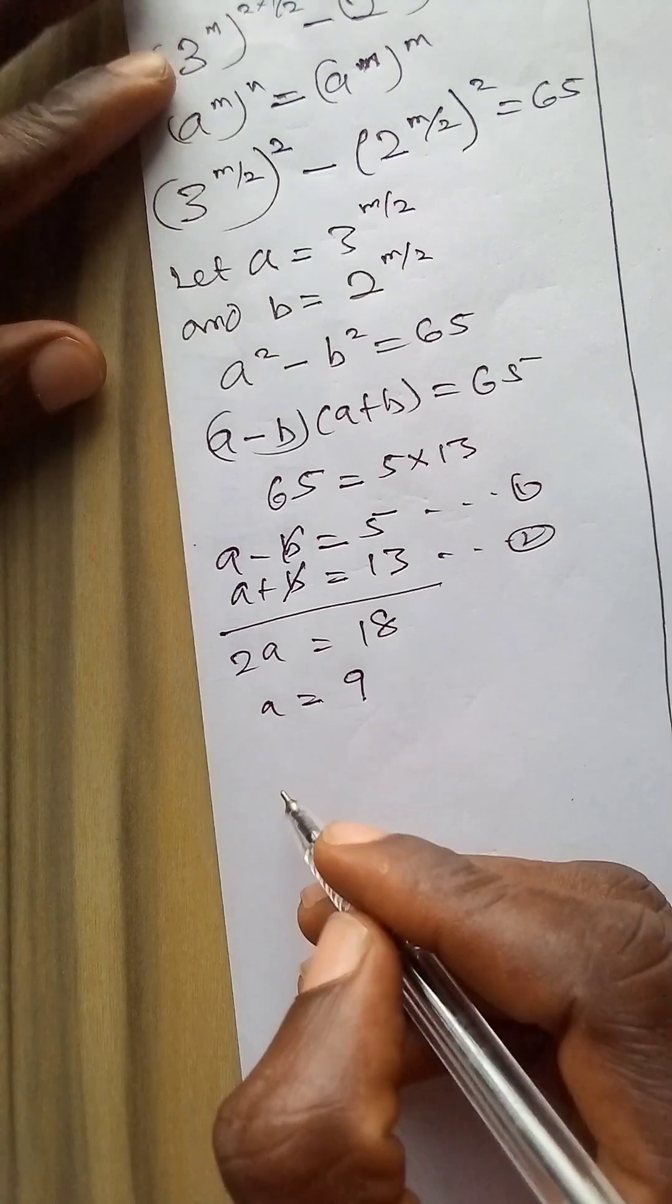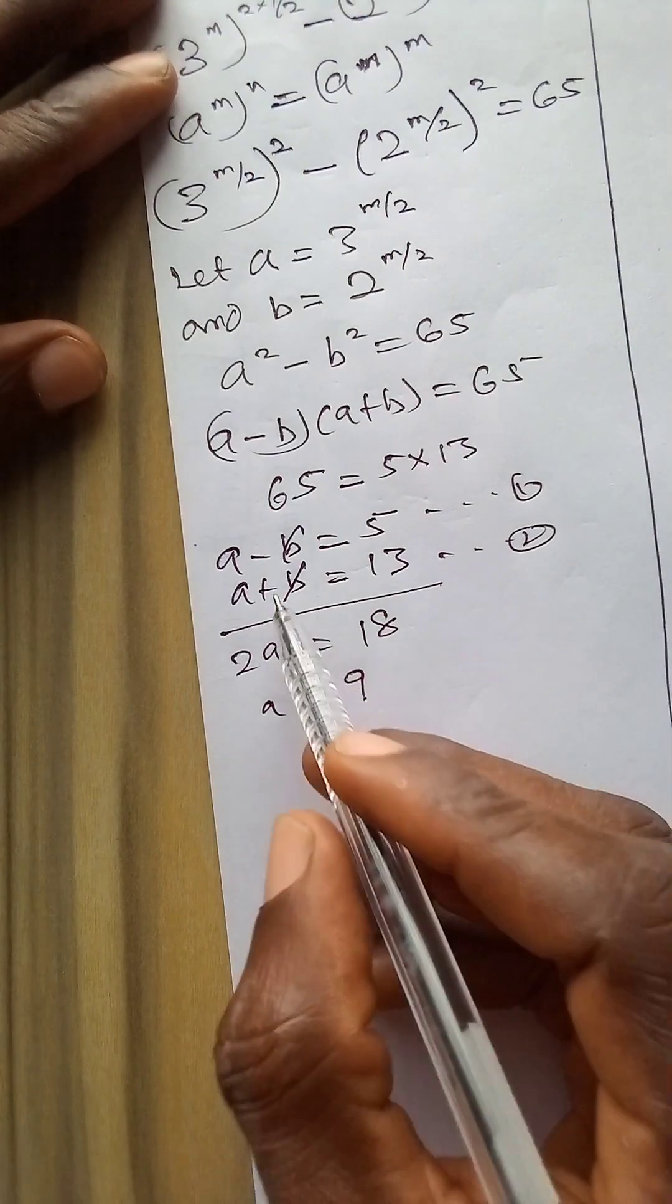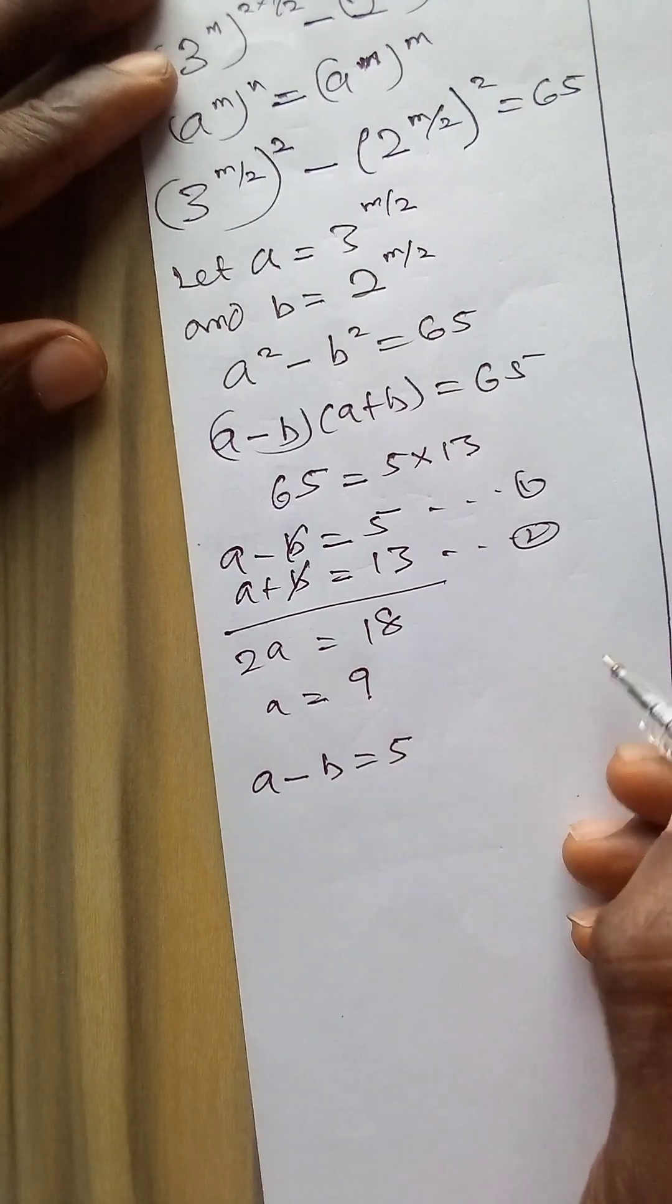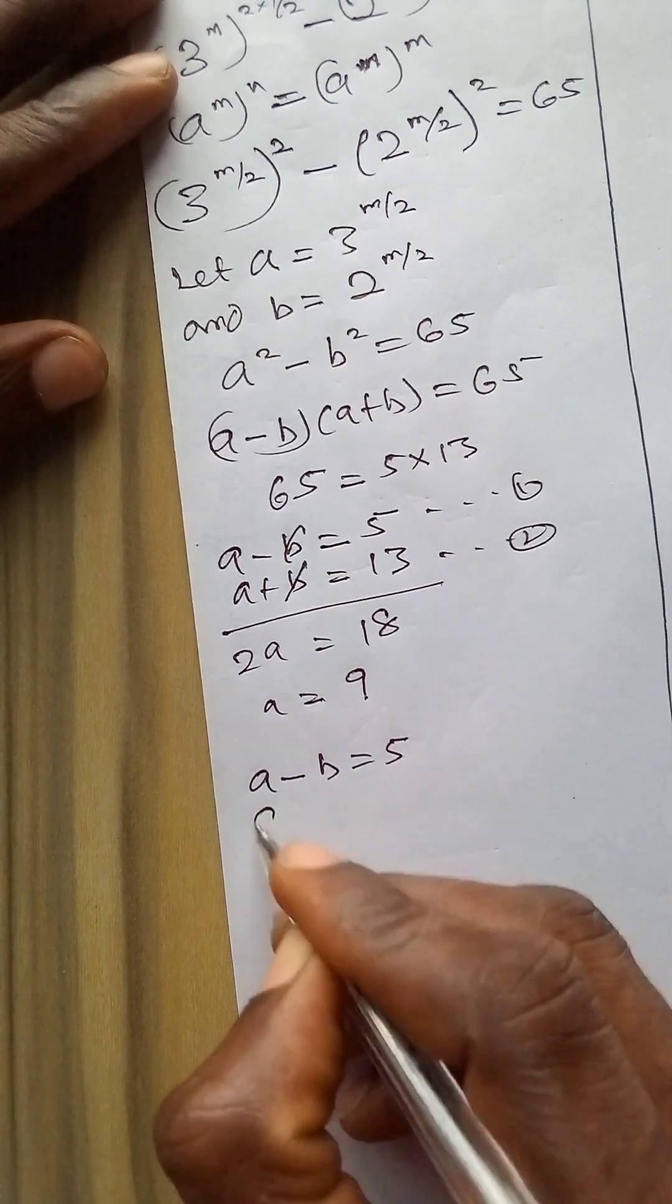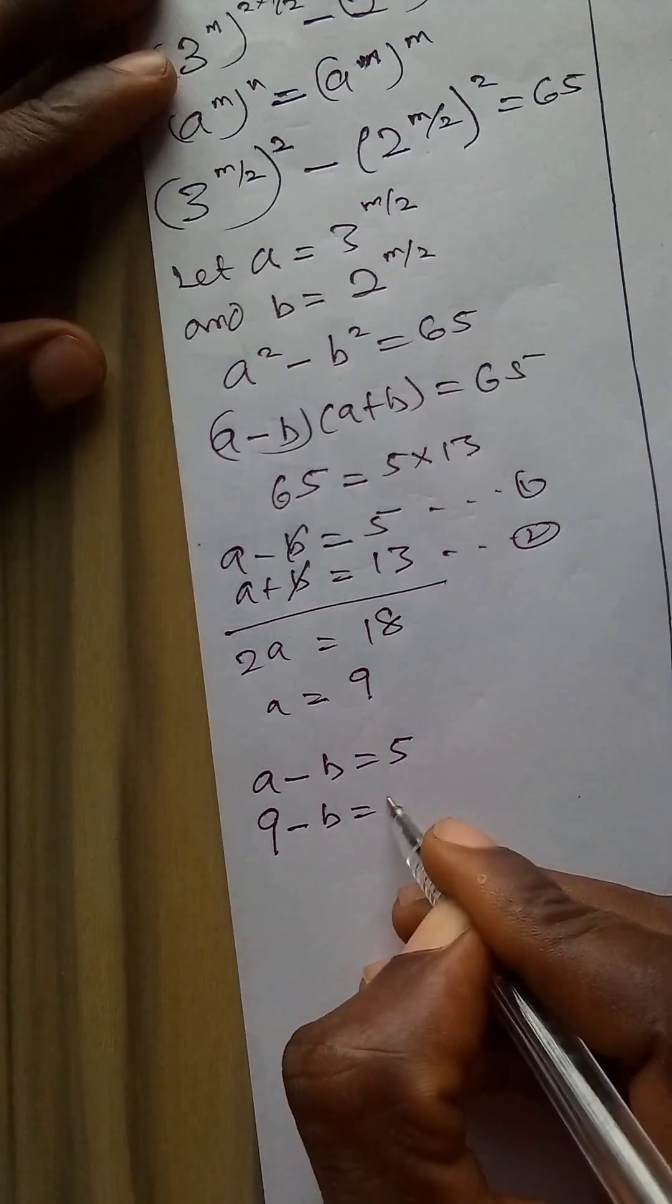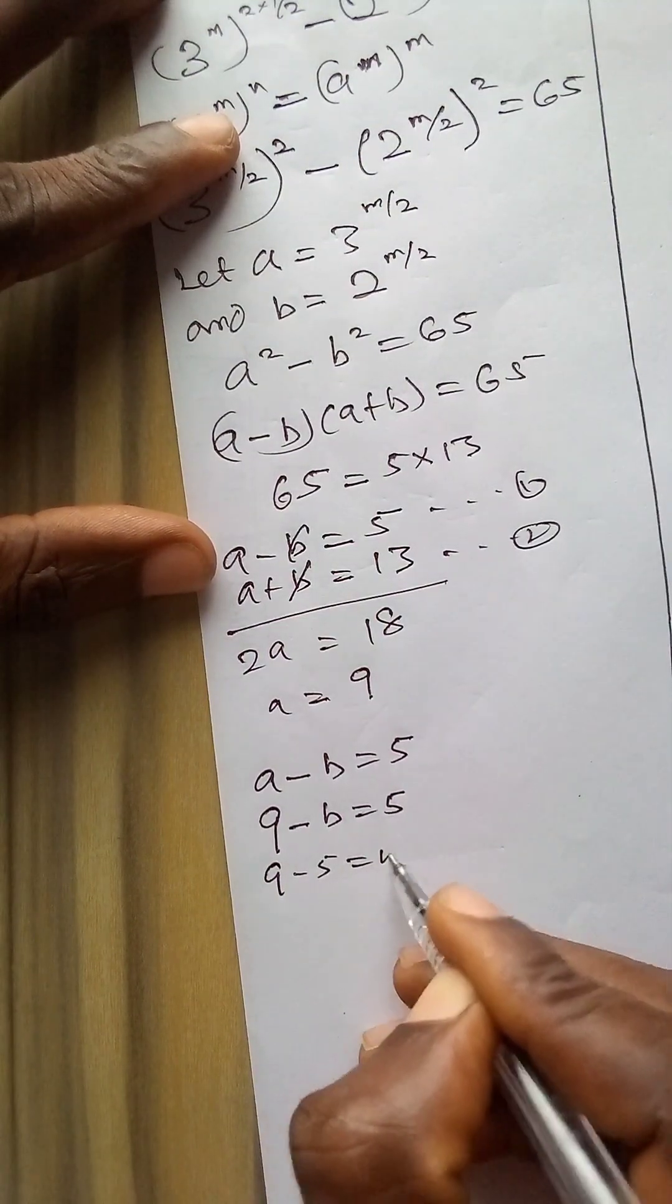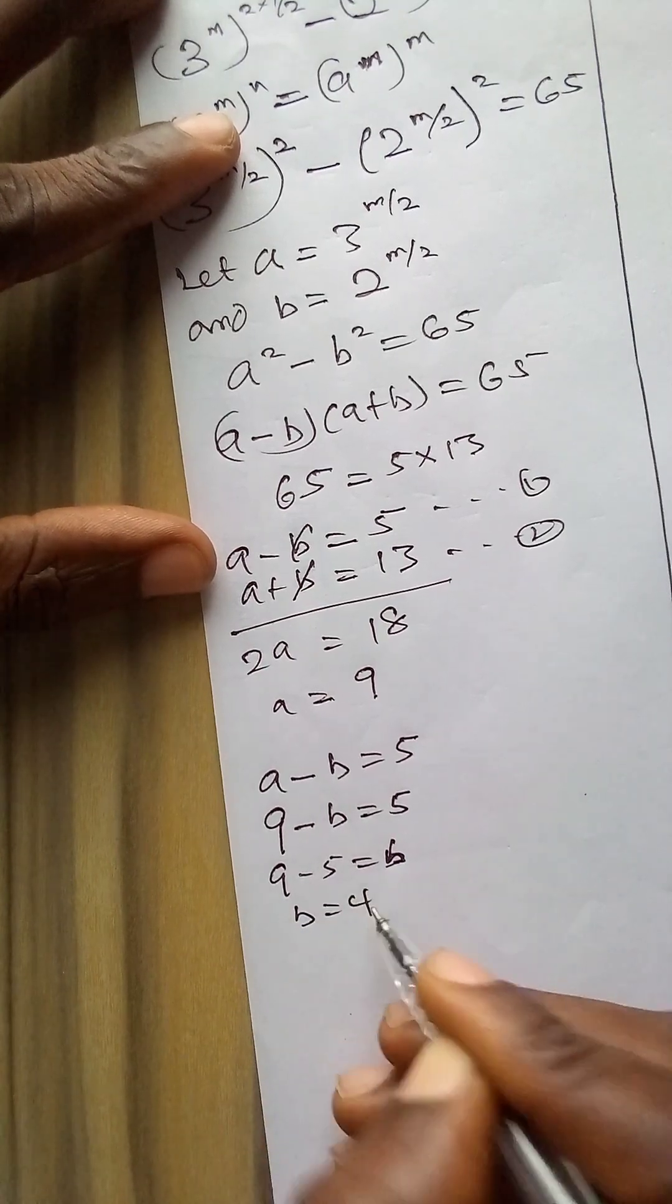Having had the value of a I can now comfortably look for the value of b. So a minus b is 5 using equation 1. Now I'll put 9 here minus b is equal to 5. 9 minus 5 will now be equal to b. Now b is 4.